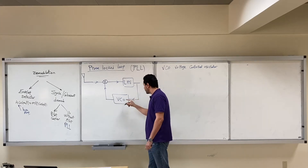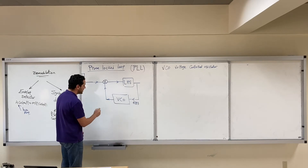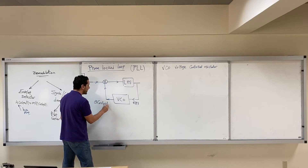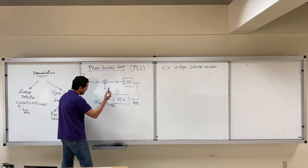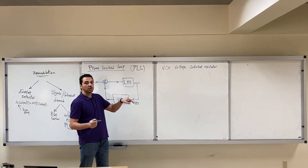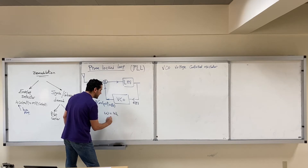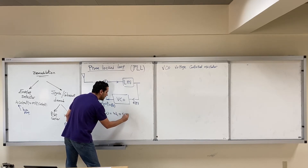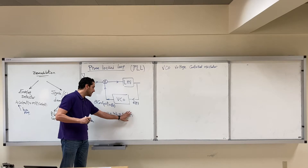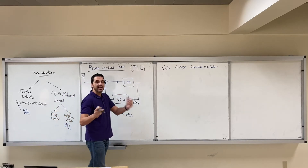The input voltage to the VCO, which we will call E(t), controls the frequency coming out of the VCO. If the signal coming out of the VCO is B·cos(ωt + θ₀), then ω is controlled by the voltage E(t). So ω has a linear equation with E(t): ω = ωc + k·E(t). This means if the input voltage is zero, the VCO generates its default frequency ωc, which is agreed upon between the transmitter and receiver.